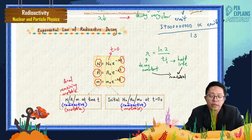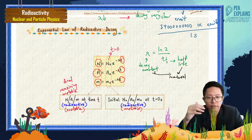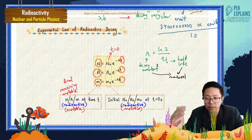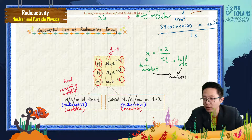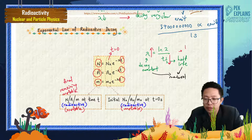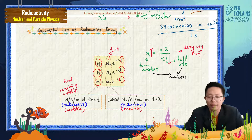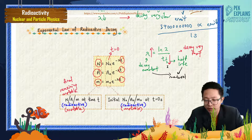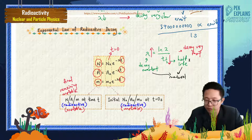Some materials have a very high decay constant and decay very fast. When you have a very high decay constant, it means you have a very short half-life. Short half-life and high lambda constant means it decays very fast.